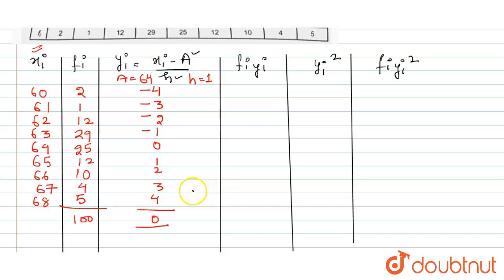So as we can see, the sum will be 0 because the magnitude of positive as well as negative is coming out to be same. So after that I need to calculate the value of fi into yi, right?